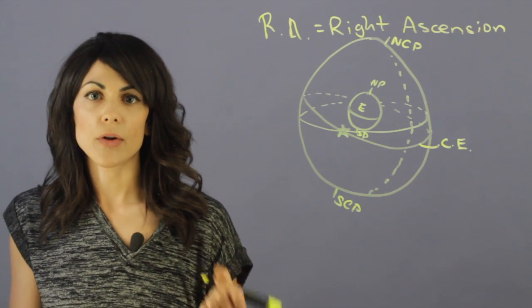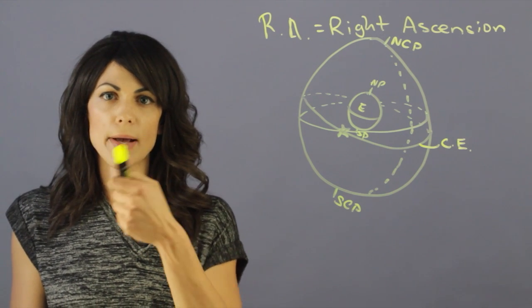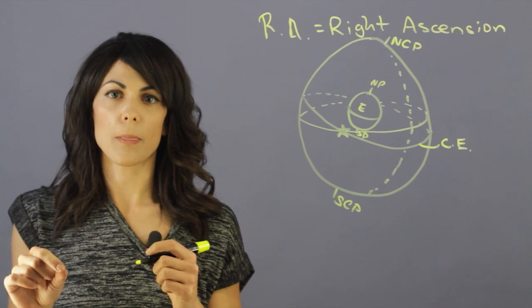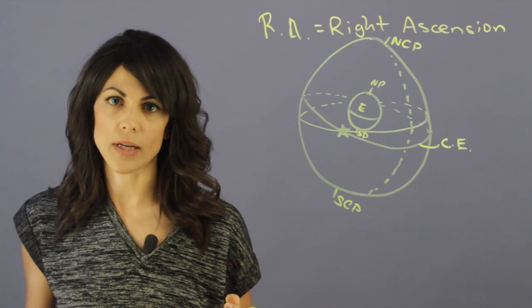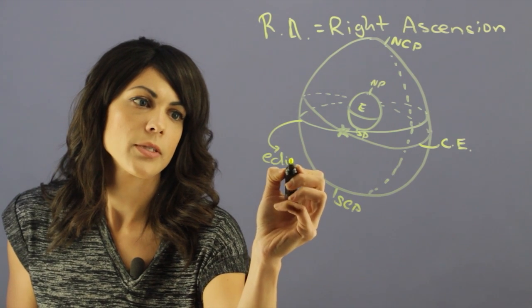Now, we have another thing that is an important line when we look at the sky. We generally want to have a line that shows the path of the sun and that's called the ecliptic. Let's call it this one, ecliptic.